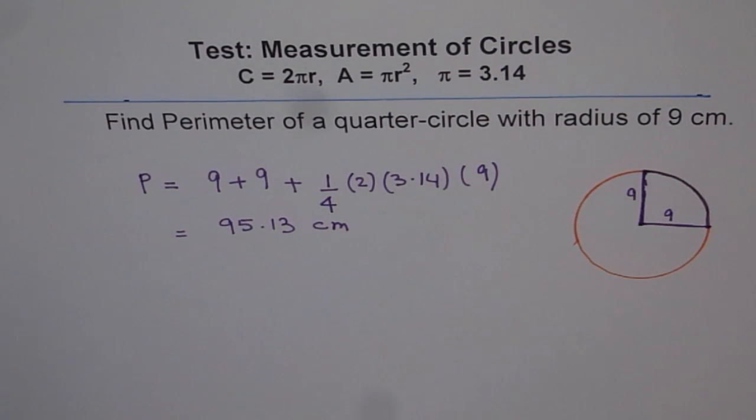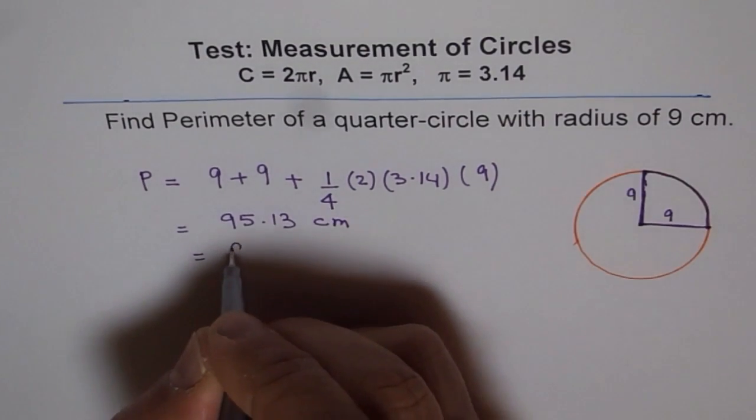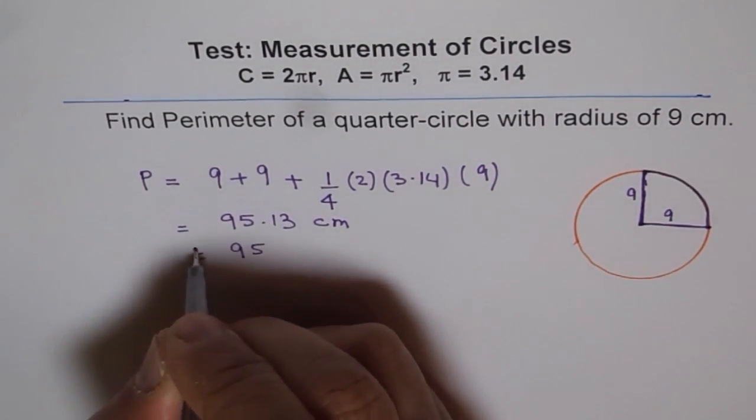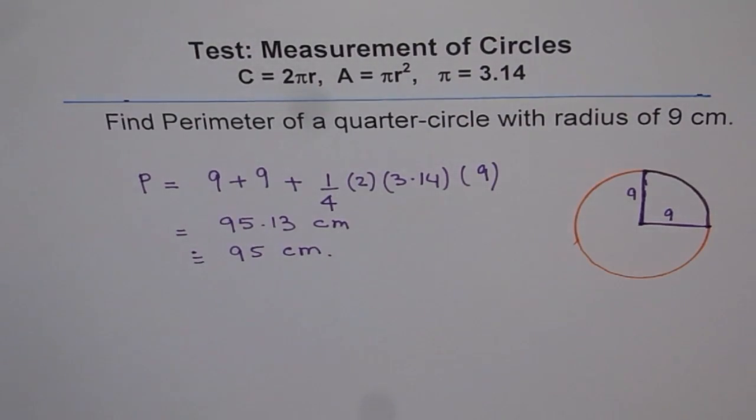Now you can round this to the whole number or to one decimal place. It is good to round this at present as 95. So it is approximately 95 cm. So that becomes our answer.